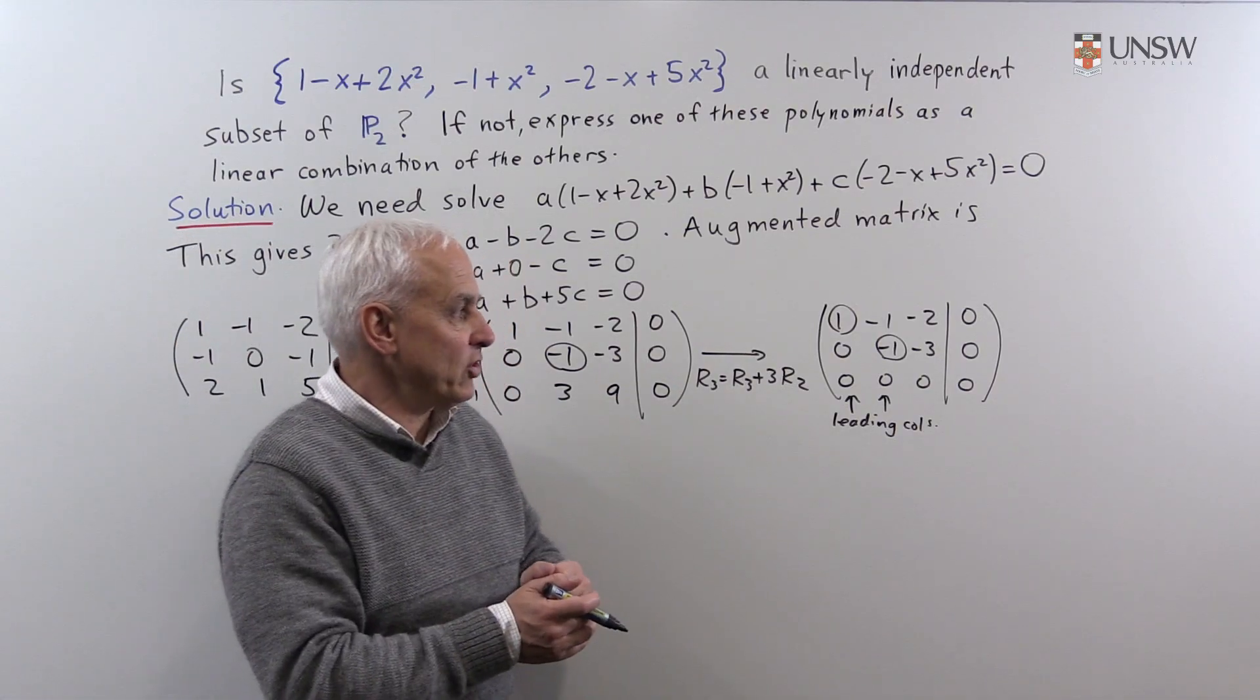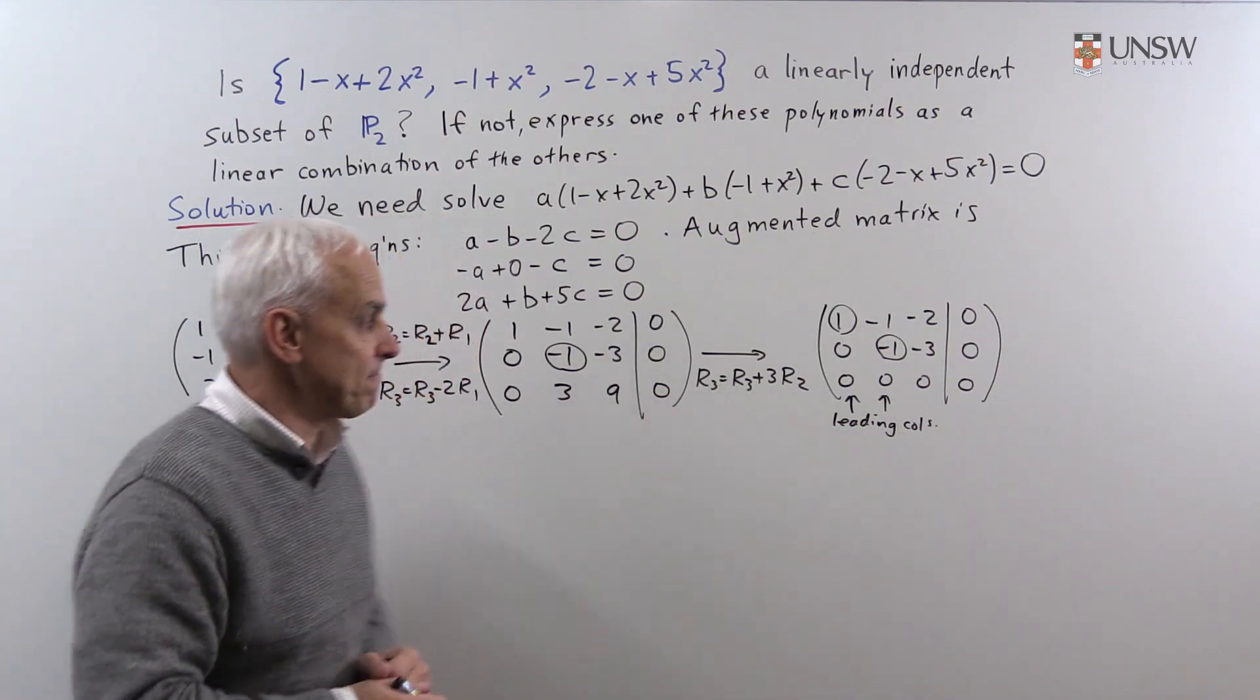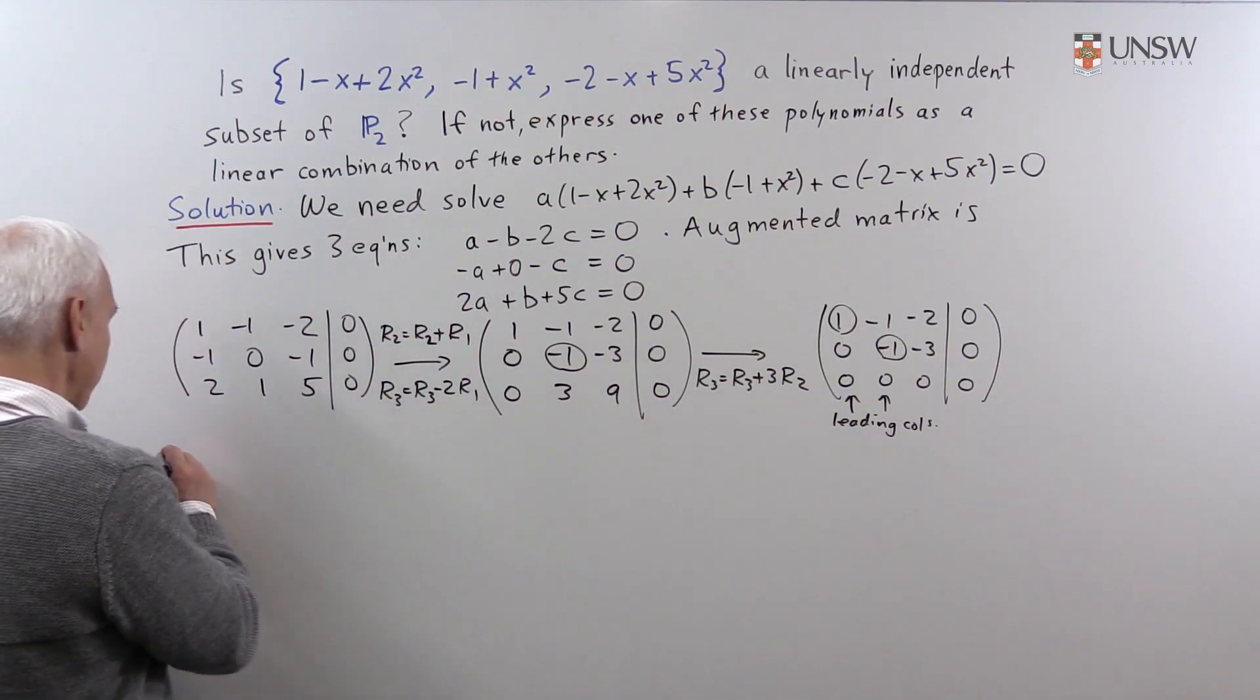So, in particular, we know that these three polynomials are not linearly independent. But let's just go a little bit further and actually find the solutions. So, for that, we're going to fully reduce this.